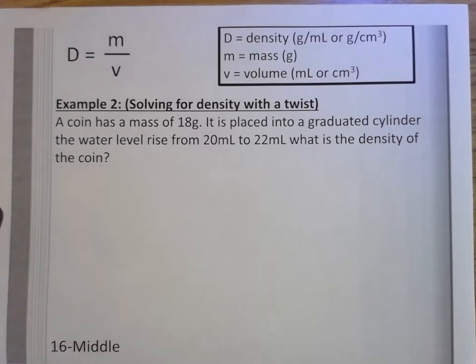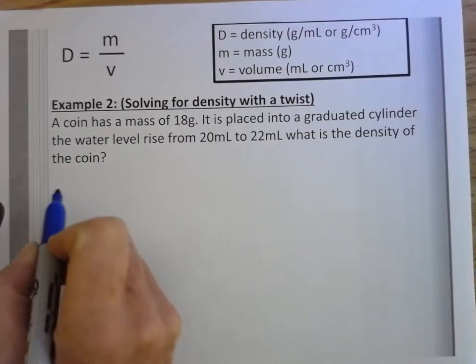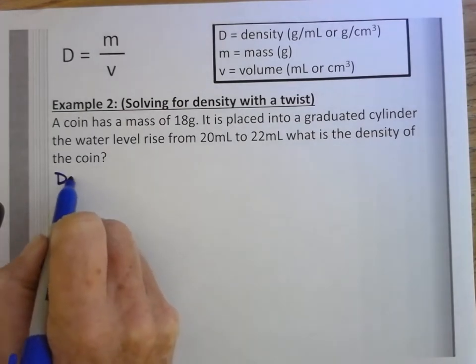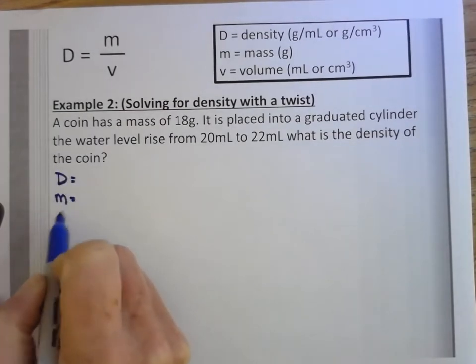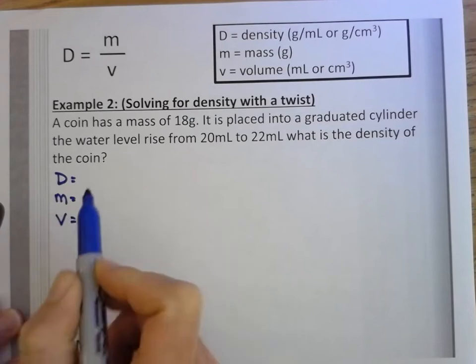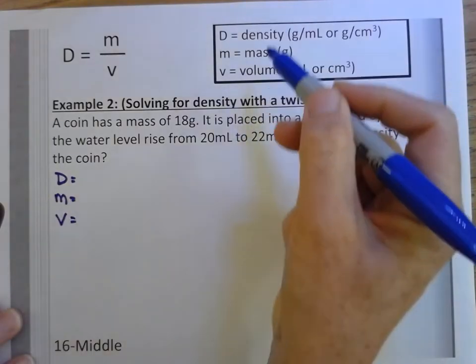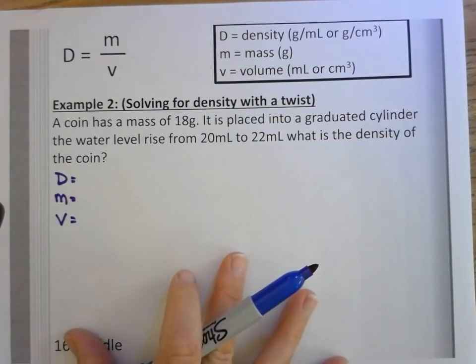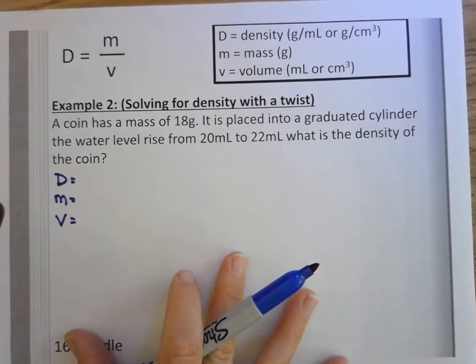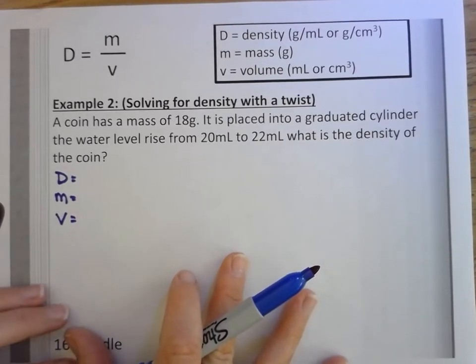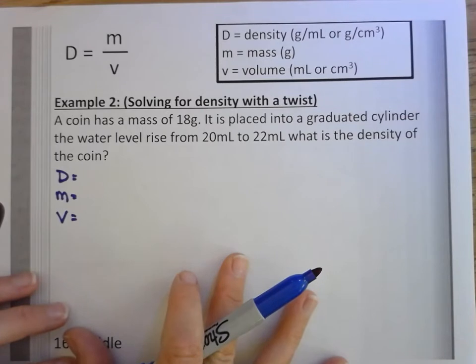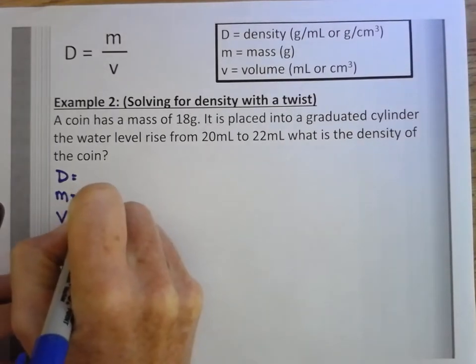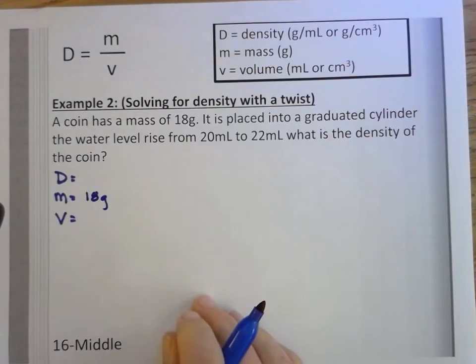I'm going to start this problem just like the first problem. I'm going to list the variables that I'm looking for in a column. These letters that represent these particular measurements are called variables. I'm going to go back to the problem and see what they gave me. The coin has a mass of 18 grams, so I'm going to write 18 here. Here's a coin.